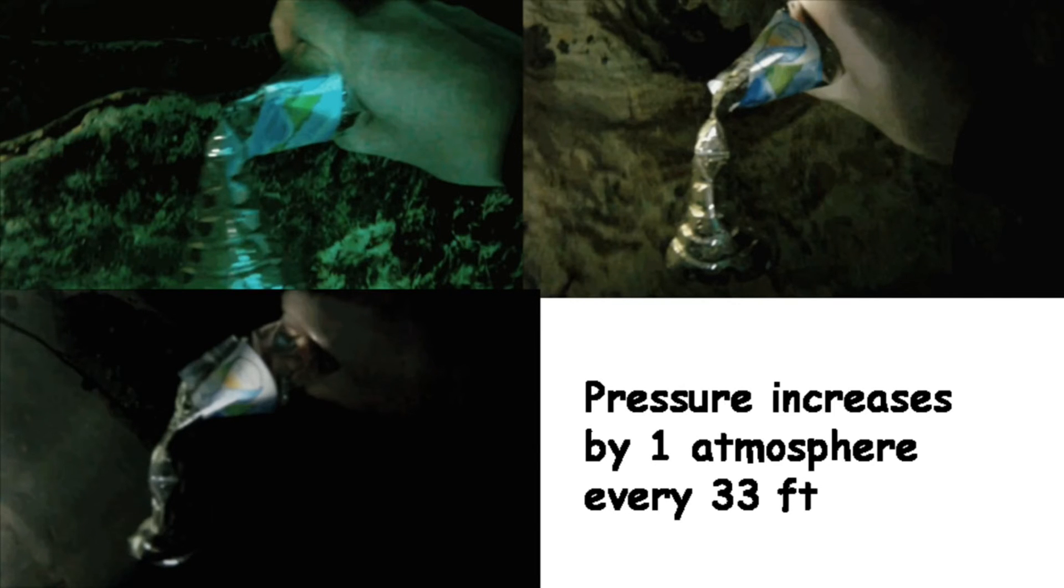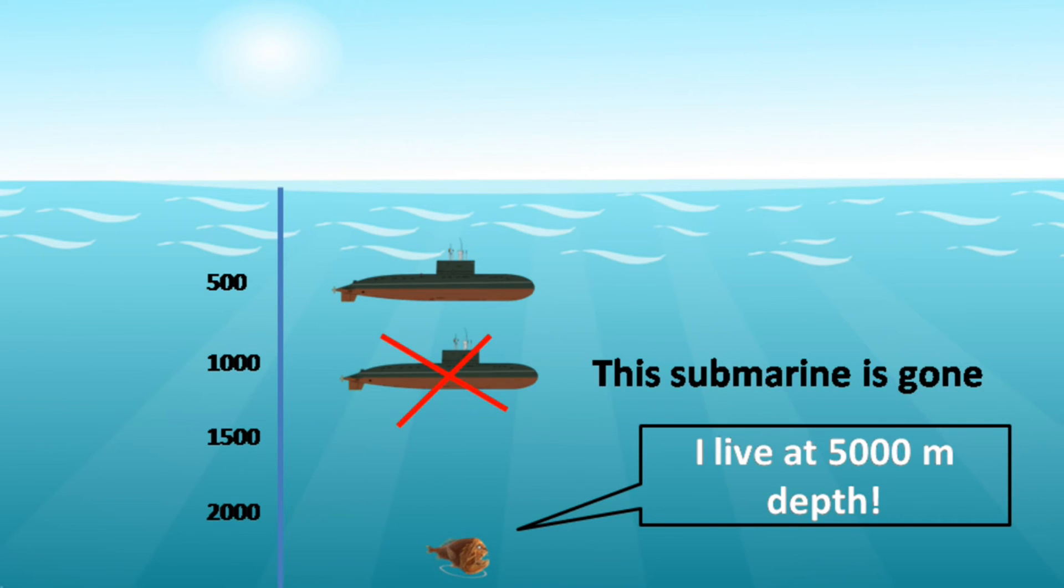It means at around 10,000 feet, the pressure would be 300 atmospheres. Imagine a mature elephant standing on your chest. But still, many animals can live in that kind of pressure, like gulper eel which lives around 9,842 feet below sea level.